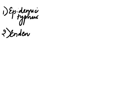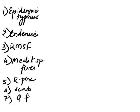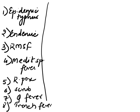In Rickettsia, we have a total of eight types to remember: epidemic typhus, endemic typhus, Rocky Mountain spotted fever, Mediterranean spotted fever, rickettsial pox, scrub typhus, Q fever, and trench fever. These are the important ones we need to remember.